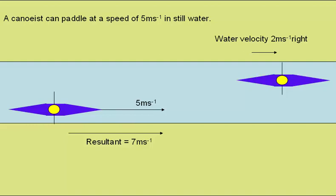This canoeist is paddling at 5 meters per second relative to the water to the left, but the water is now moving at 2 meters per second to the right, and so the canoeist will have a resultant velocity of 3 meters per second to the left, as 5 plus minus 2 equals 3.